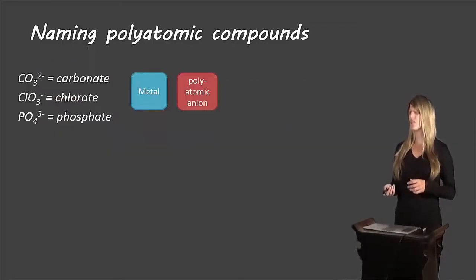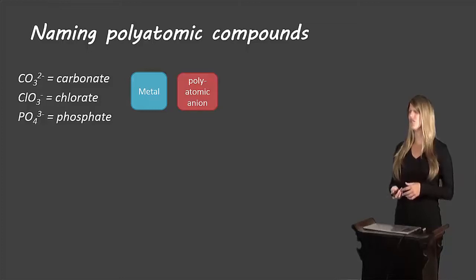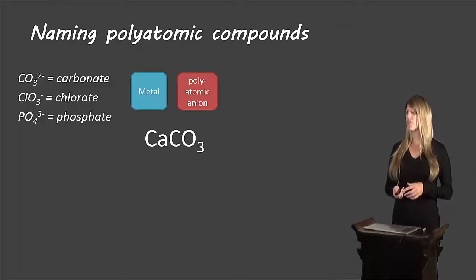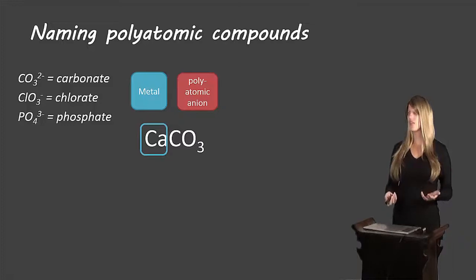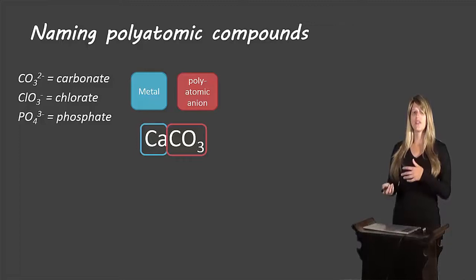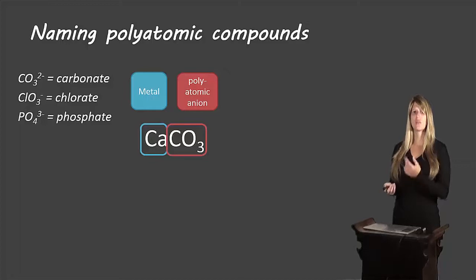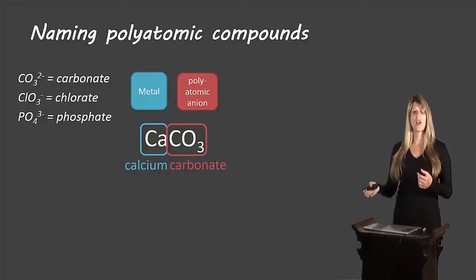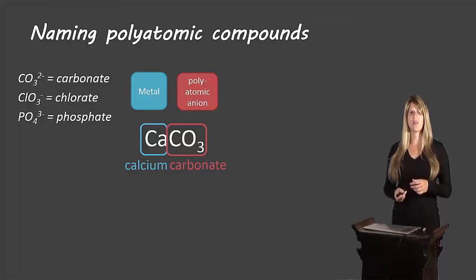Let's look at a few naming examples. On the left I have the list of polyatomic ions. Starting with CaCO3: Ca is calcium, our metal, and CO3 is carbonate, our polyatomic anion — we know it's the anion because it appears on our polyatomic list. So we name it calcium carbonate.